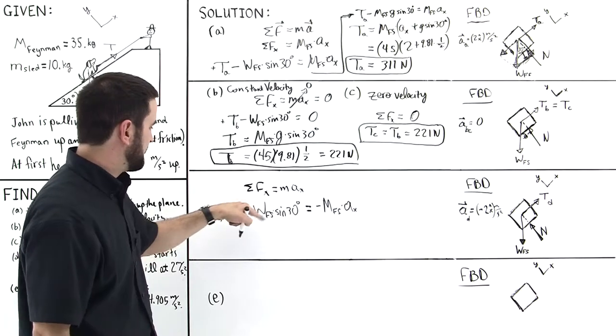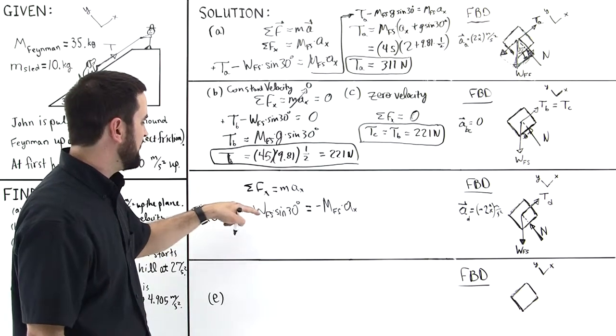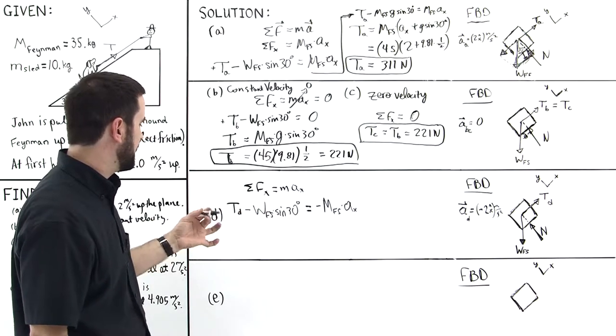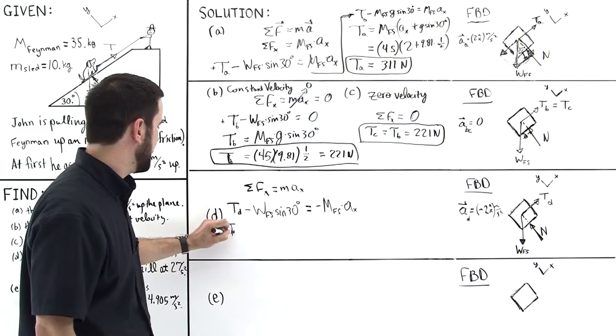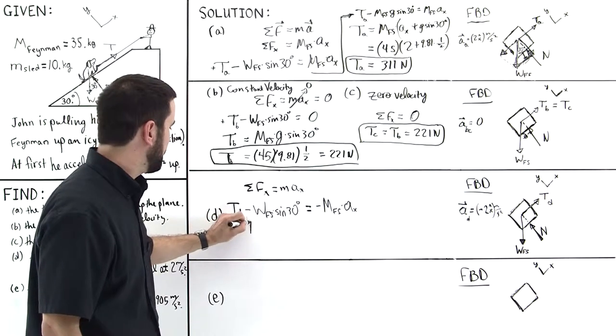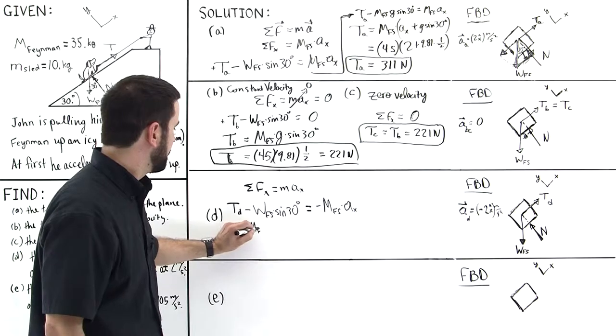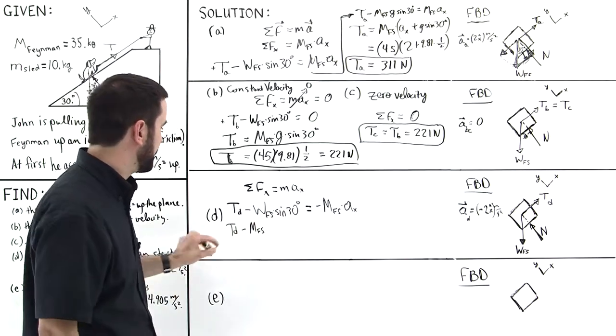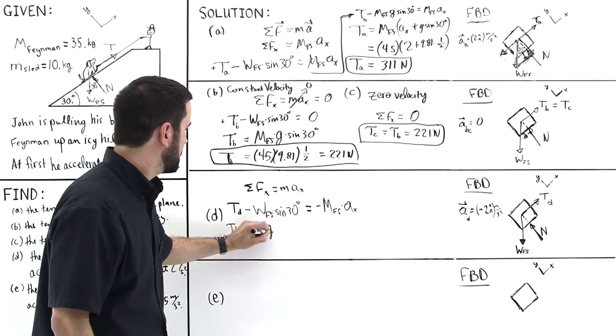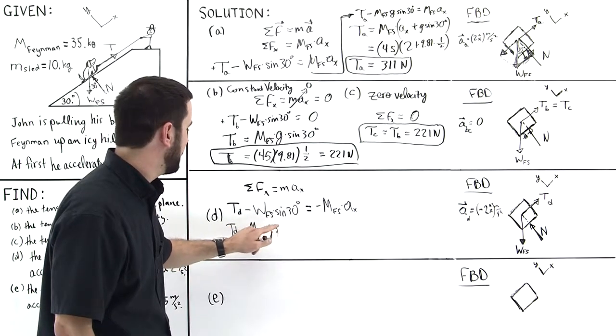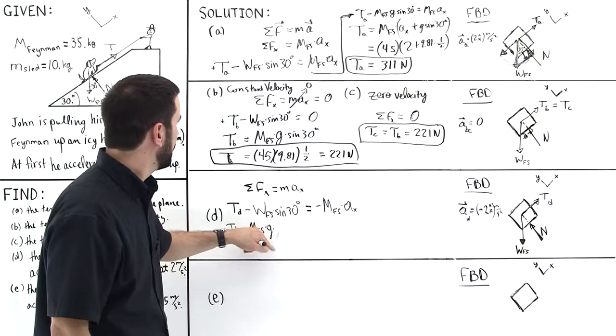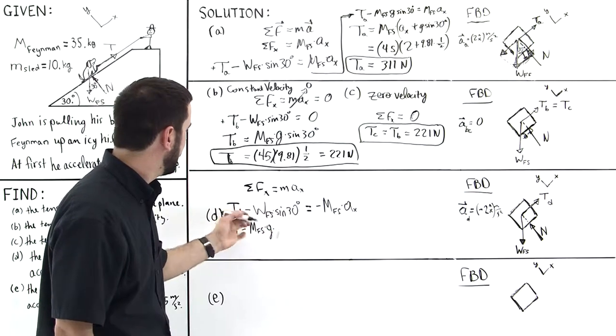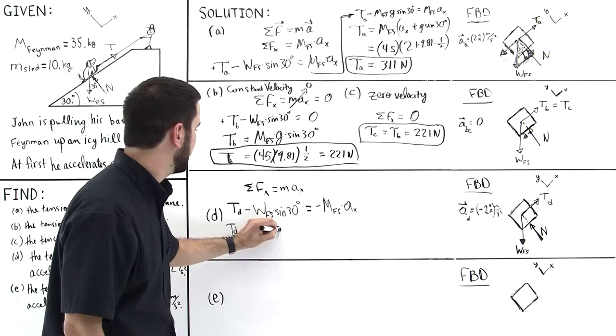Okay, so I'm going to substitute Mg for this weight of Feynman plus the sled. So we have T sub D minus the mass of Feynman times the mass of Feynman plus the sled, the mass of both of them, times G times the sine of 30 is a half. So we'll just go ahead and we can put that in now. Well, I'll tell you what, let's leave it here.